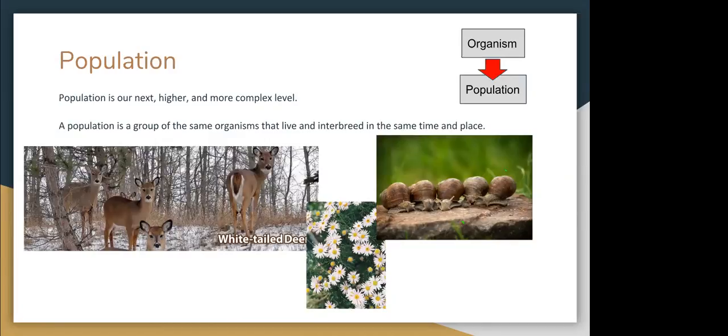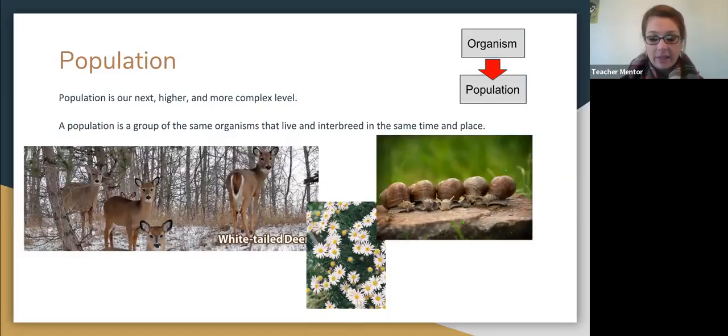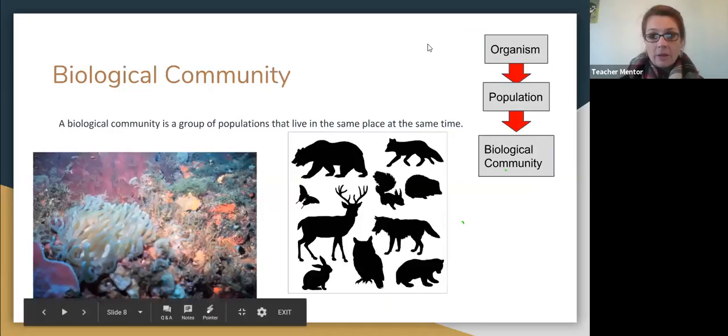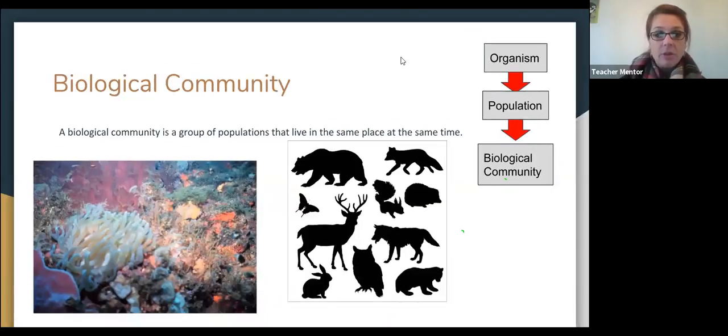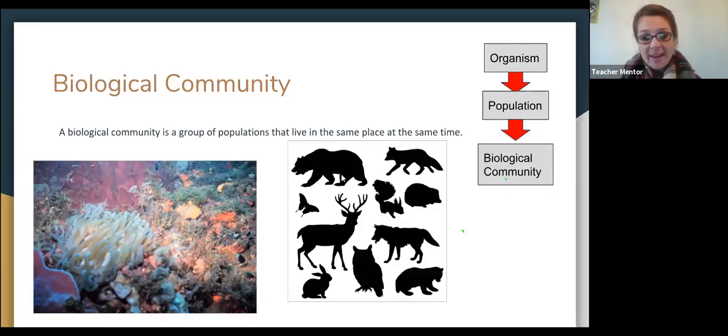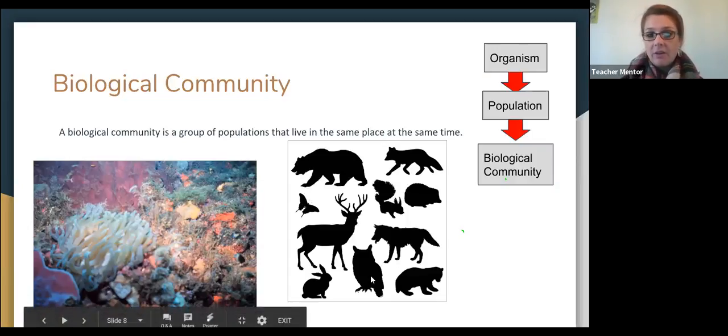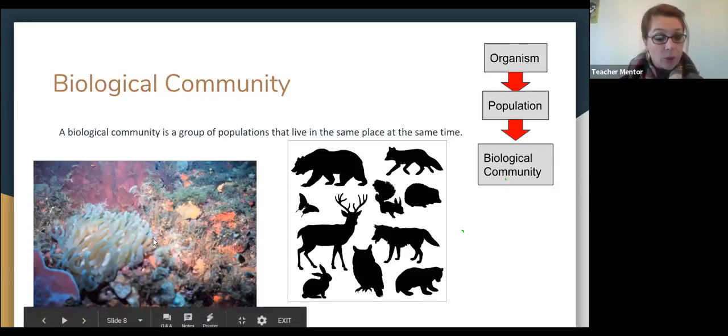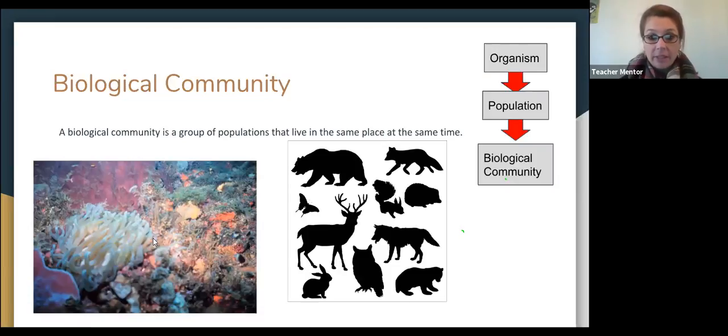From organization, we go to population. Population is going to be our more complex level where we have multiple organisms that live and interbreed at the same place and time. So using our single organisms from the last slide, we now have a group of white tail deer. They're going to occupy the same time and place. We have a bunch of daisies that we can see are growing and occupying at the same time in the same place. And the population of snails that are on here, they're all lined up. But again, we had a single organism and we have developed into a population. Any questions so far? No.